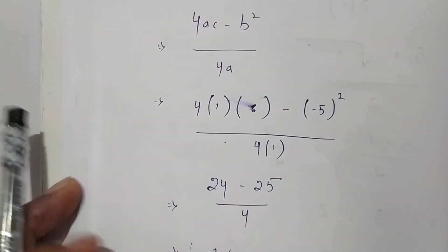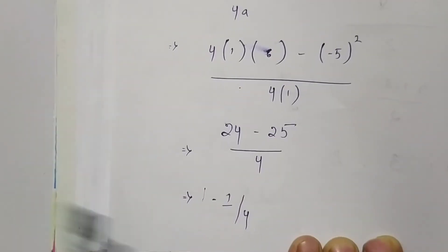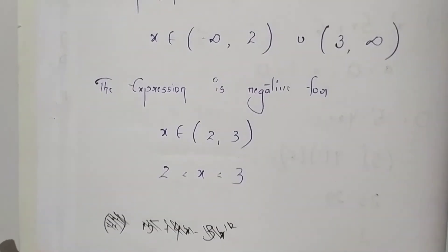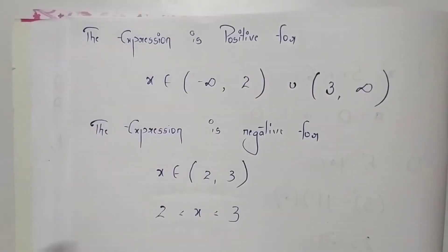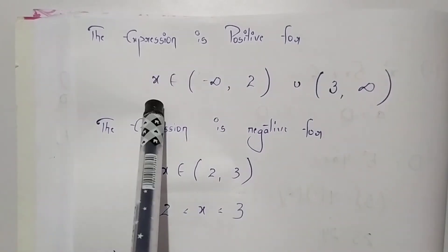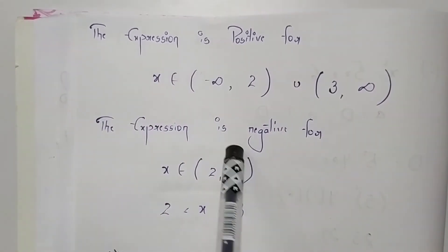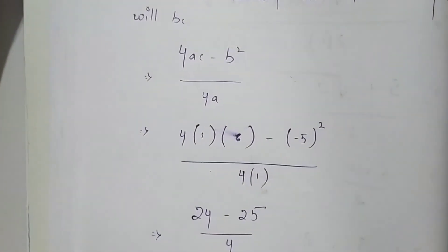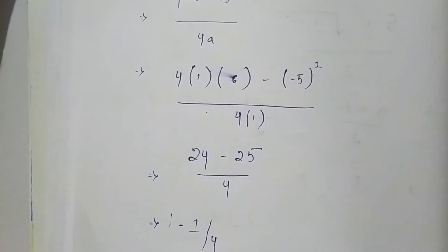This gives us -1/4. Therefore, the expression is positive if x belongs to (-∞, 2) ∪ (3, ∞), negative if x belongs to (2, 3), and the extreme value is -1/4.